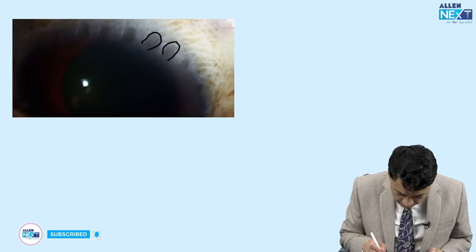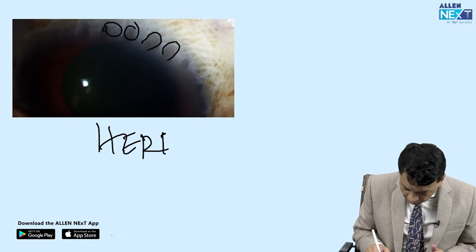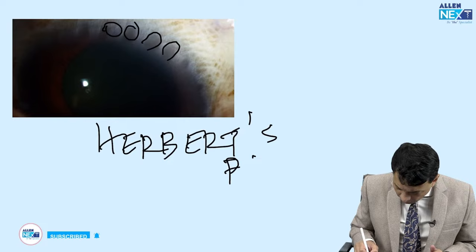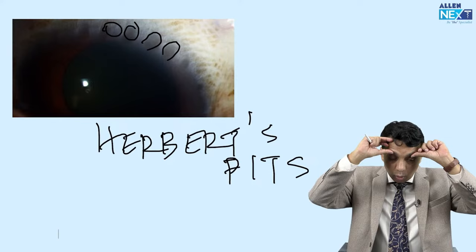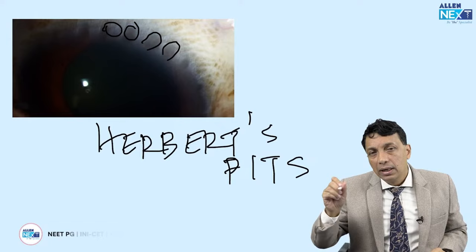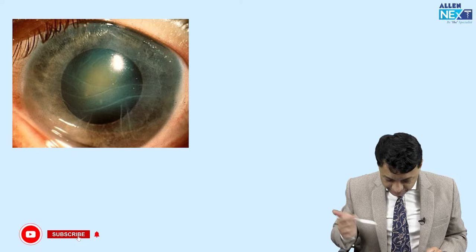Look at these rounded things on the limbus — these are the cicatrized follicles of trachoma, called Herbert's pits. They tell us of a past attack of trachoma. Ask the patient to look down, hold up the lids, and under the upper limbus you will find these telltale cicatrized follicles called Herbert's pits, found nowhere else except in trachoma.